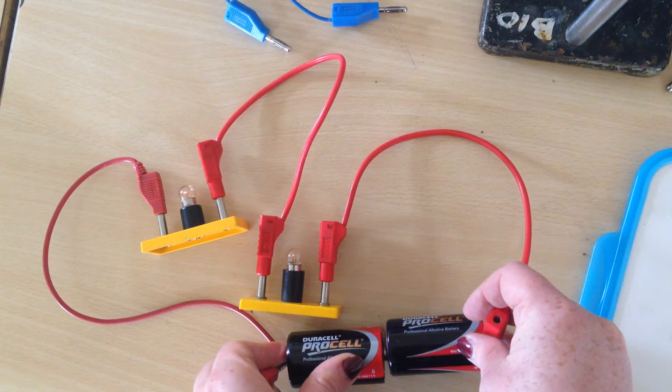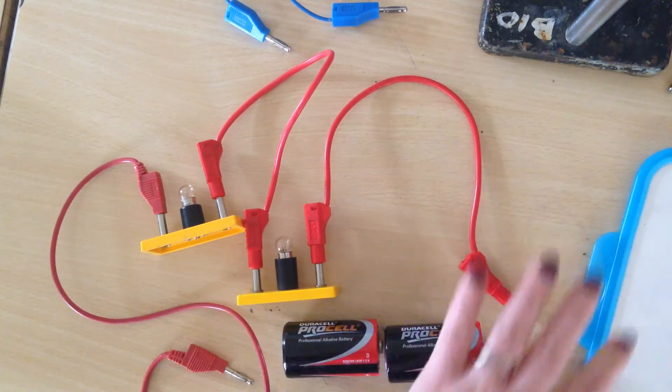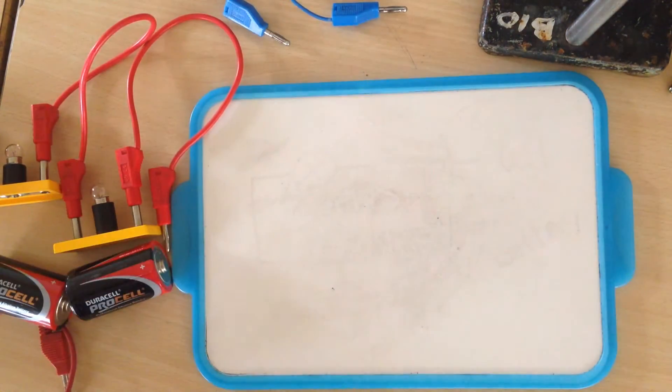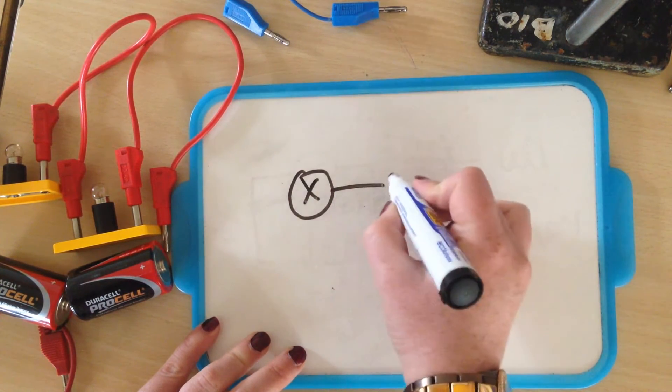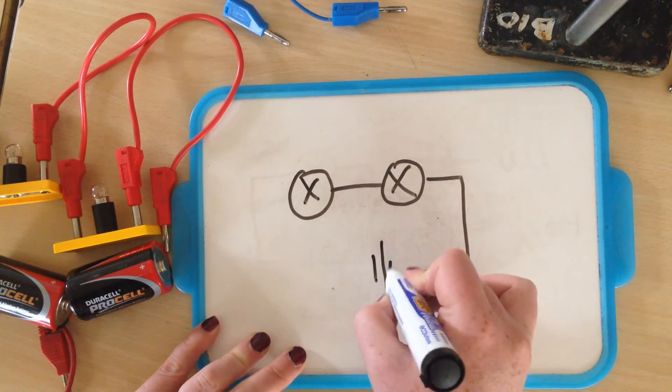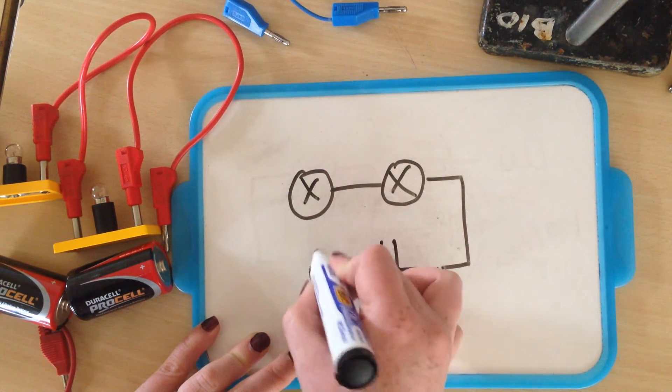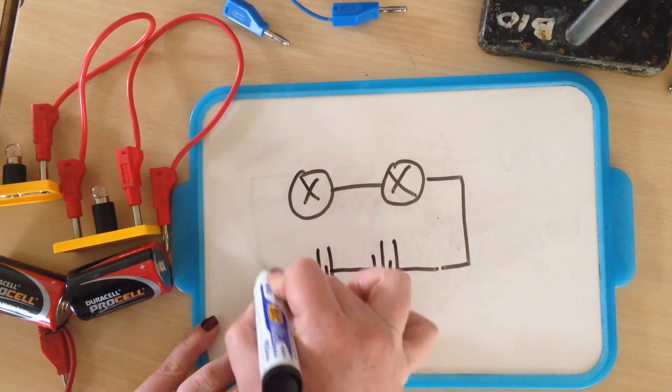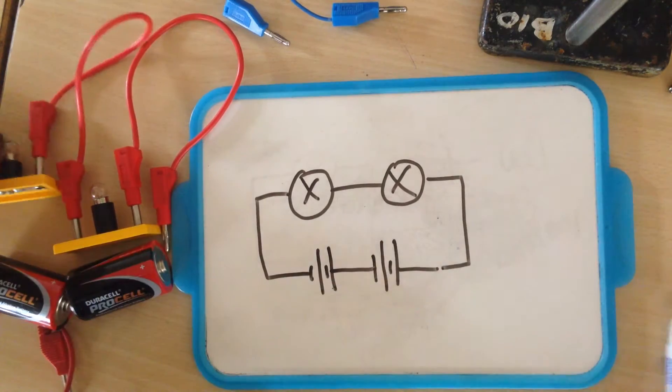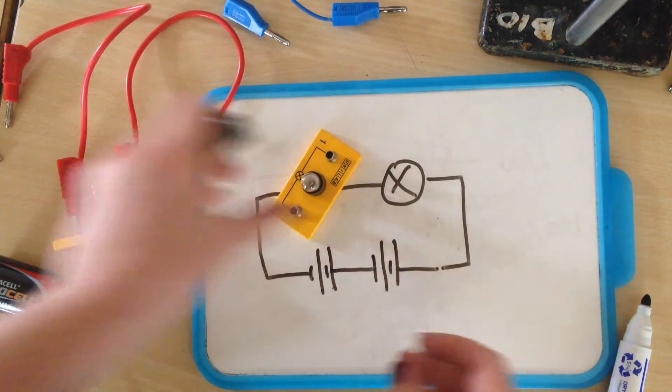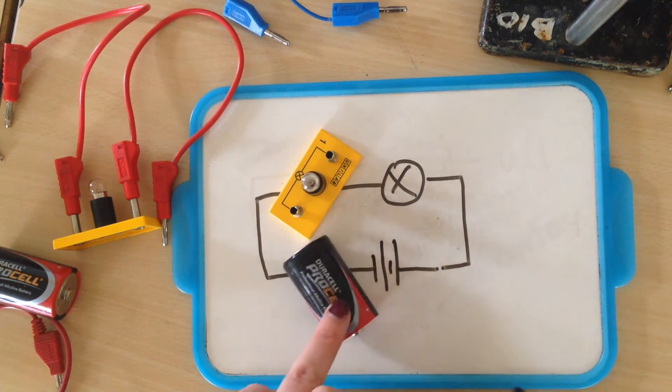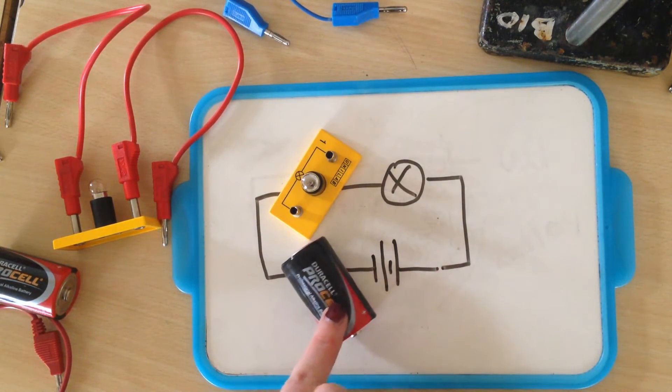It's not very bright because these are only batteries and little bulbs. If I wanted to draw this, I would have my two symbols for my bulbs and then I would have my batteries down here because I put two batteries in. So those would be my two bulbs and my two batteries, my bulbs and my batteries. And wires are just represented as straight lines, remember with a pencil and ruler please.